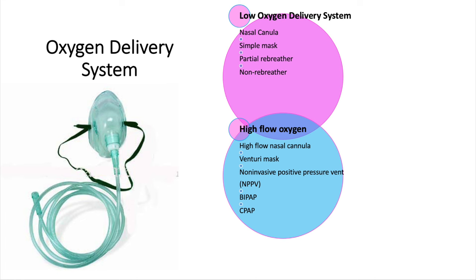Gas exchange can be affected in the setting of respiratory or cardiac problems that results in hypoxemia, which is decreased oxygen in the blood. It can occur from an infection such as sepsis, fever, or anemia. So let's go straight into the types of oxygen — it's divided into two categories.